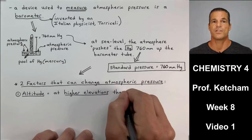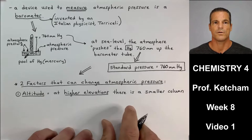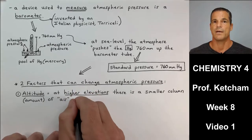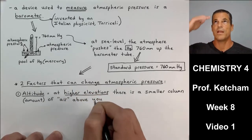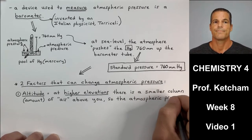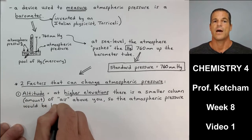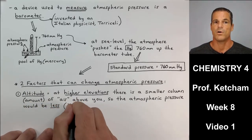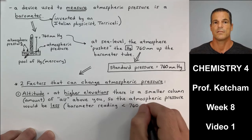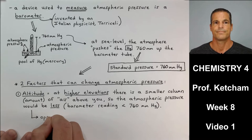At higher elevations, when you're up in the mountains, there's a smaller column or a smaller amount of air above you. You're higher up, so the amount of air above you is less. So, the atmospheric pressure would be less. Let me say that again. At higher elevations, there is a smaller column or amount of air above you. So, the atmospheric pressure would be less. A barometer reading would be less than 760 mmHg.